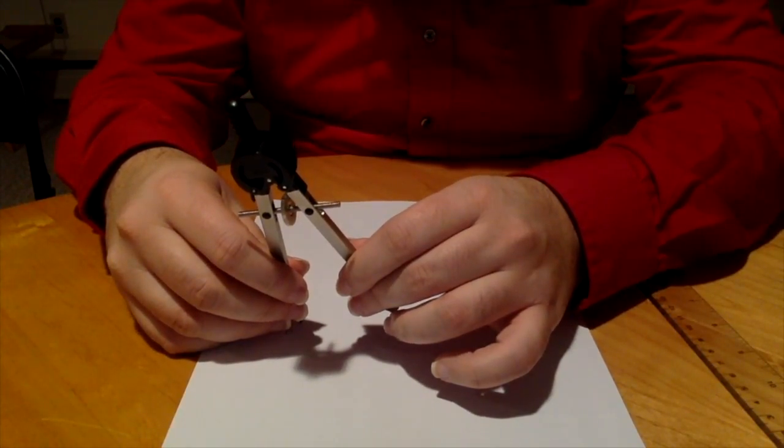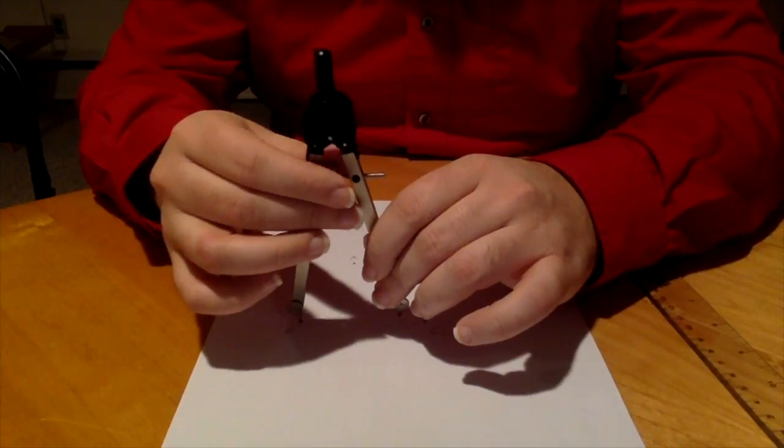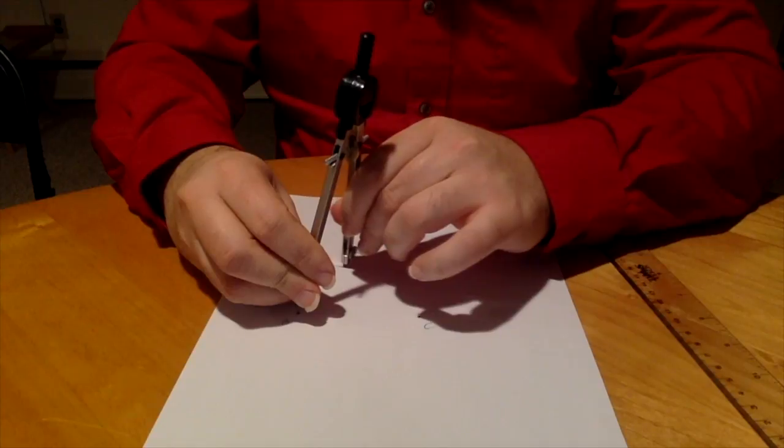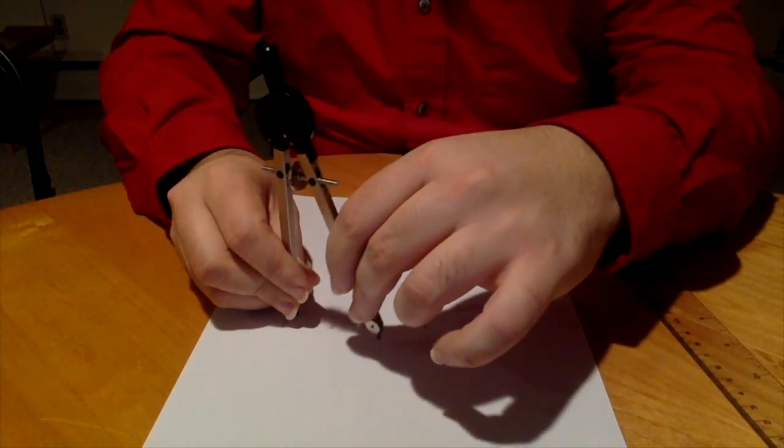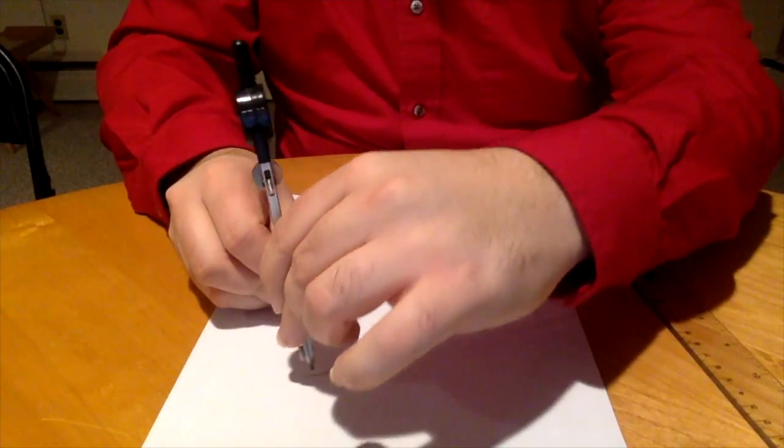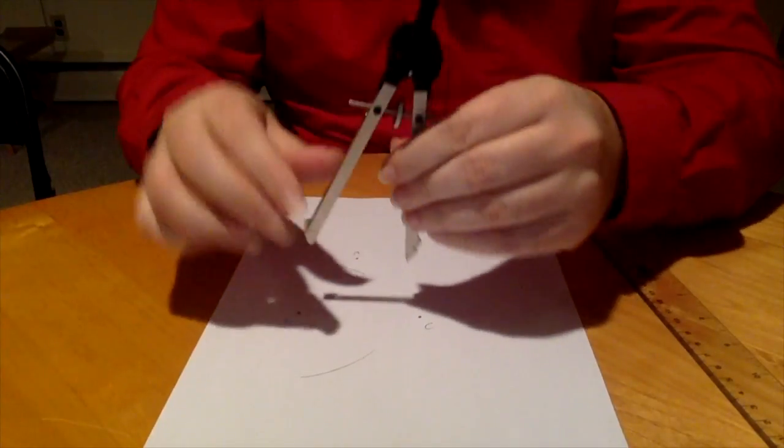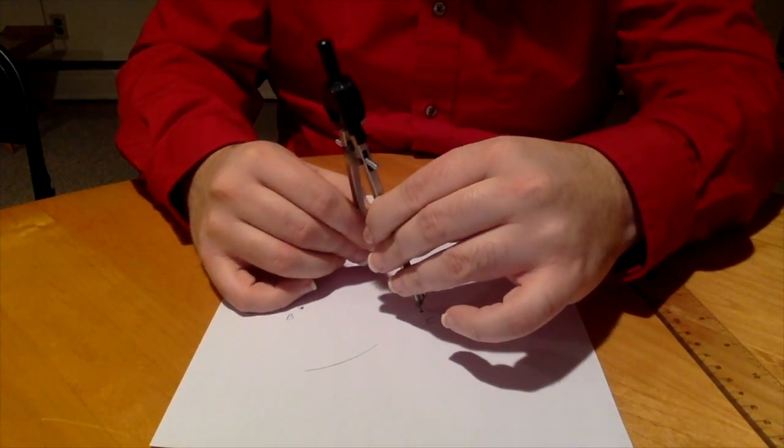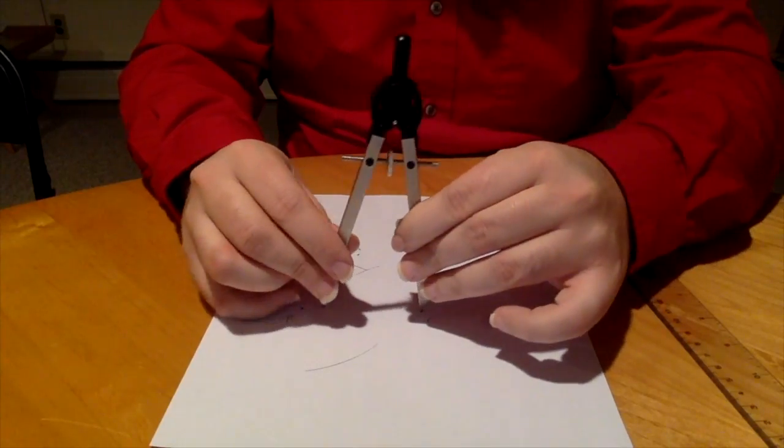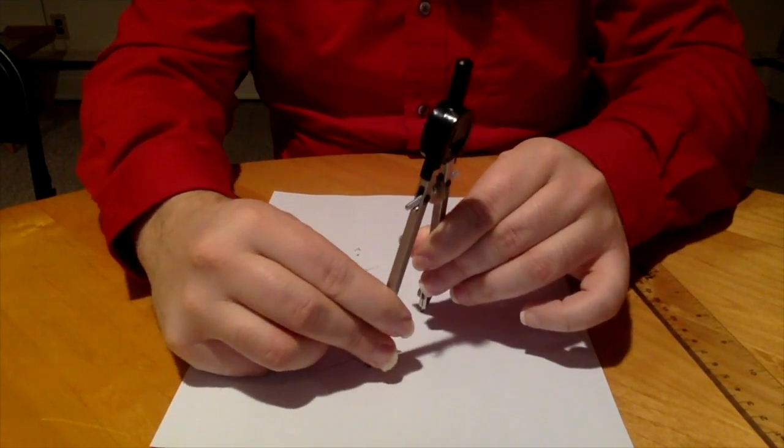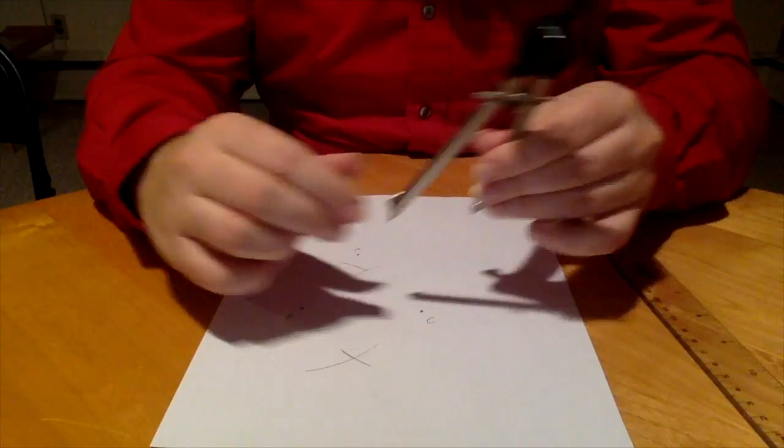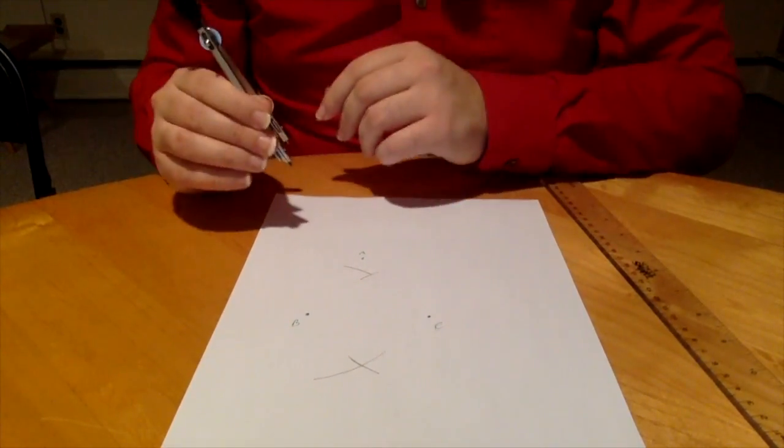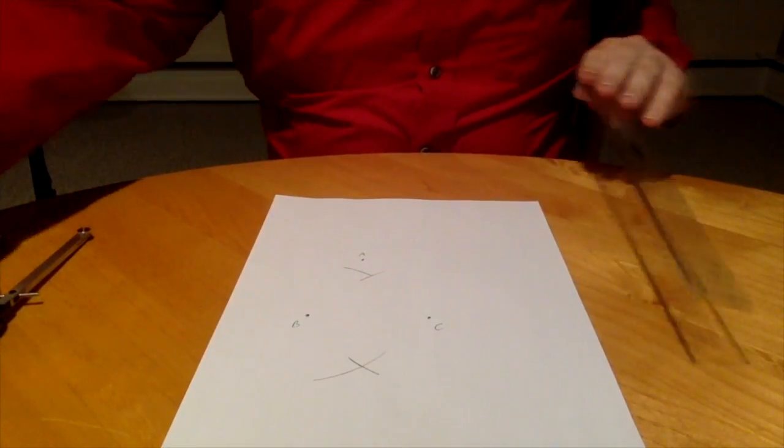And we want the perpendicular bisectors, so it's going to be more than halfway. Go above and below. Above and below. I keep getting it so it's like perfect intersection right there. And then we connect them.